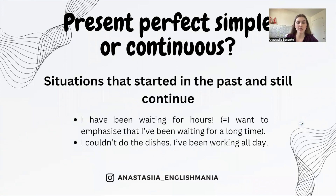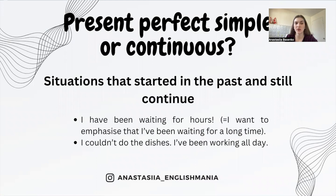We can use present perfect continuous — not simple — with dynamic verbs for situations that started in the past and still continue, when we want to emphasize how long the situation has lasted. For example: 'I've been waiting for hours' — I want to emphasize that I've been waiting a long time. Or: 'I couldn't do the dishes — I've been working all day.'